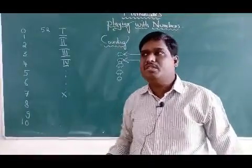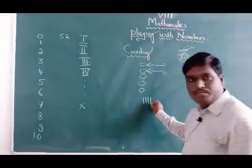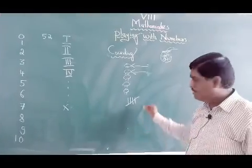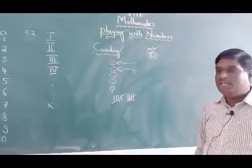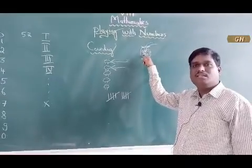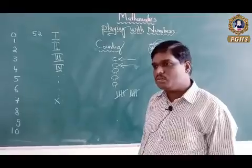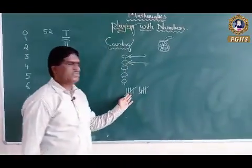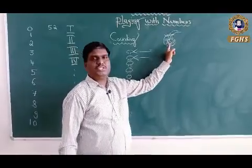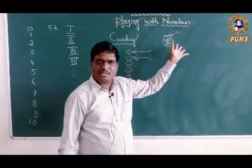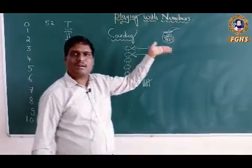You might have seen tally marks like this: one, two, three, four, and this is five. Six, seven, eight, nine, ten. Instead of using stones, man started using tally marks. This was very easy to explore for the future. If you are using stones and pebbles, you cannot remember it, you cannot register it, you cannot record it.